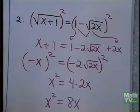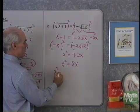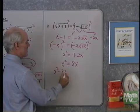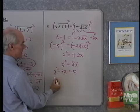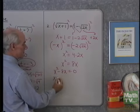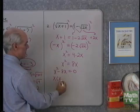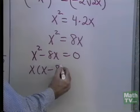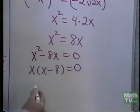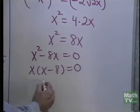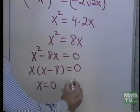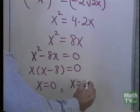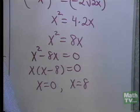This is a quadratic equation, so I'm going to put it in standard form: x squared minus 8x equals 0. I factor out an x from each term: x times x minus 8 equals 0. Setting these factors equal to 0, I get x equals 0 and x equals 8.